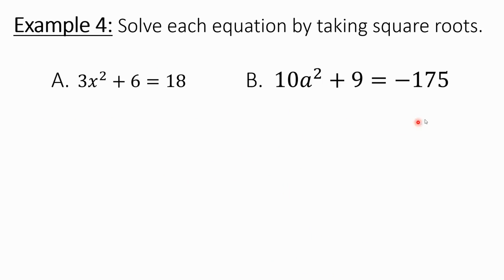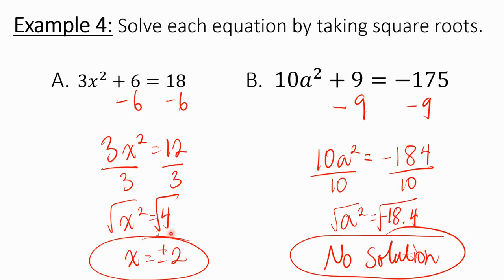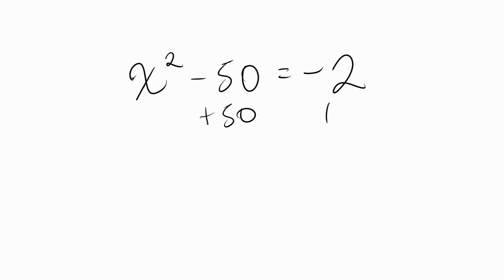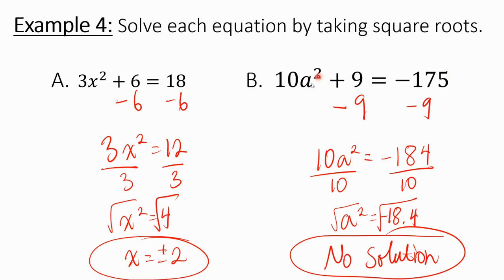For example 4, go ahead and copy the problems down and try them on your own, then pause the video to check your solutions. The solutions are x equals positive and negative 2, and no solution for the second one. Be extra careful — just because you see a negative number doesn't automatically mean no solution. For example, x squared minus 50 equals negative 2: you might think it's no solution, but when you add 50 to both sides, you get x squared equals 48, which you can definitely solve. Make sure you work through it, and only say no solution when you reach a point where you'd need the square root of a negative number.